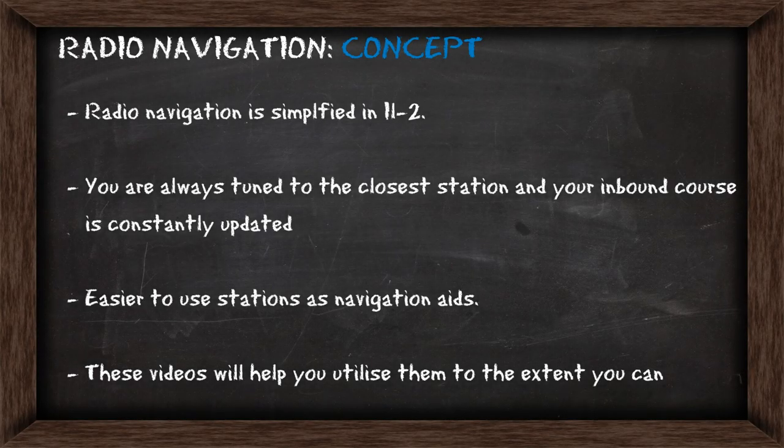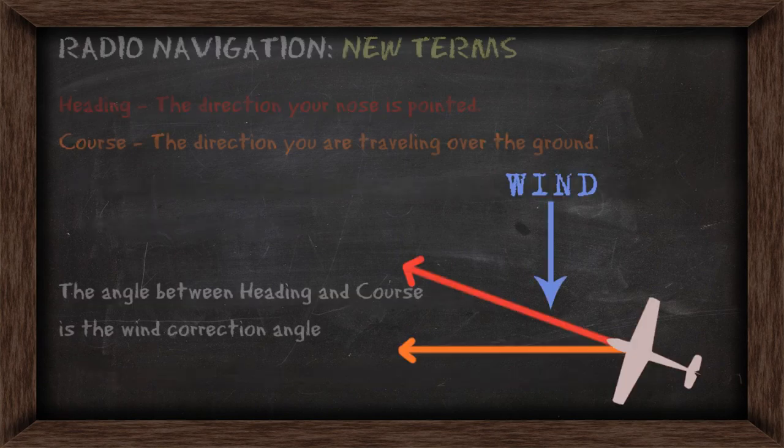Radio navigation is simplified in IL-2 because you're always going to be tuned to the closest station and your inbound course is being constantly updated. This makes it easier to use the navigation aids. There are some new terms to understand for this video. The first is heading, which is the direction your nose is pointed. There's course, which is the direction you're traveling over the ground, and when there's wind involved, heading and course won't be the same. So the angle between heading and course is the wind correction angle.